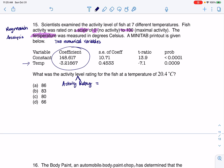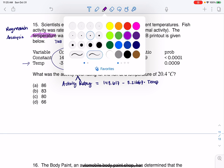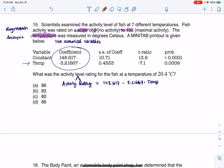That's what I'm predicting with this linear regression equation. So I've got 148.617 minus 3.21667 times the temperature. Let me color code this, matching this up.